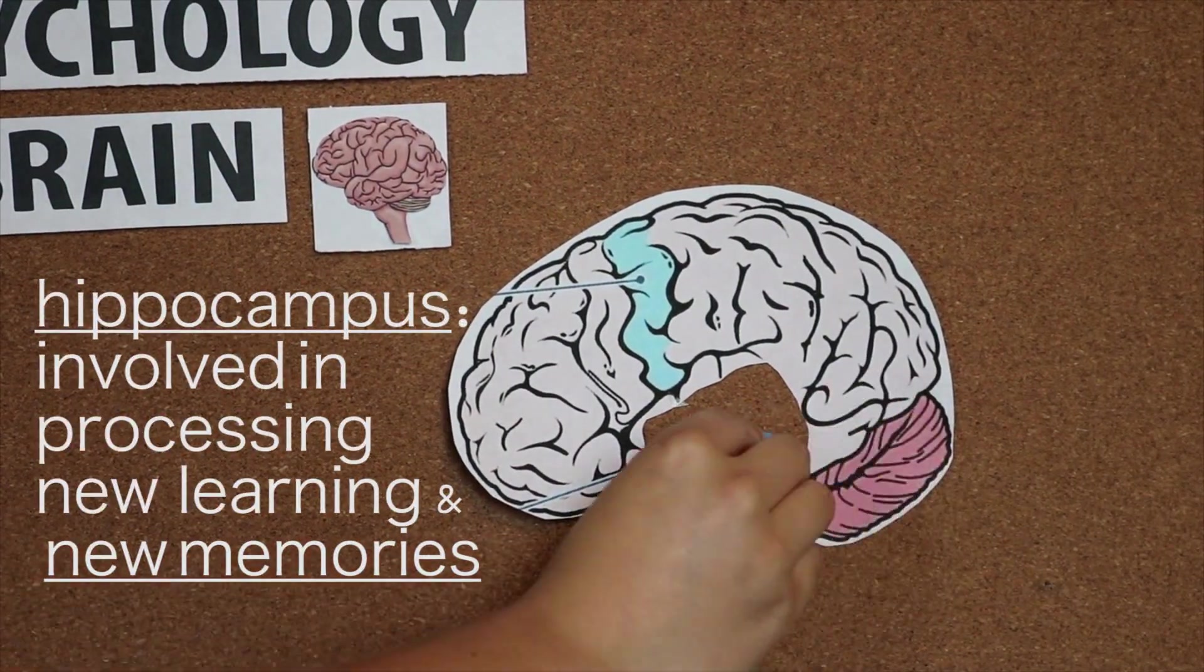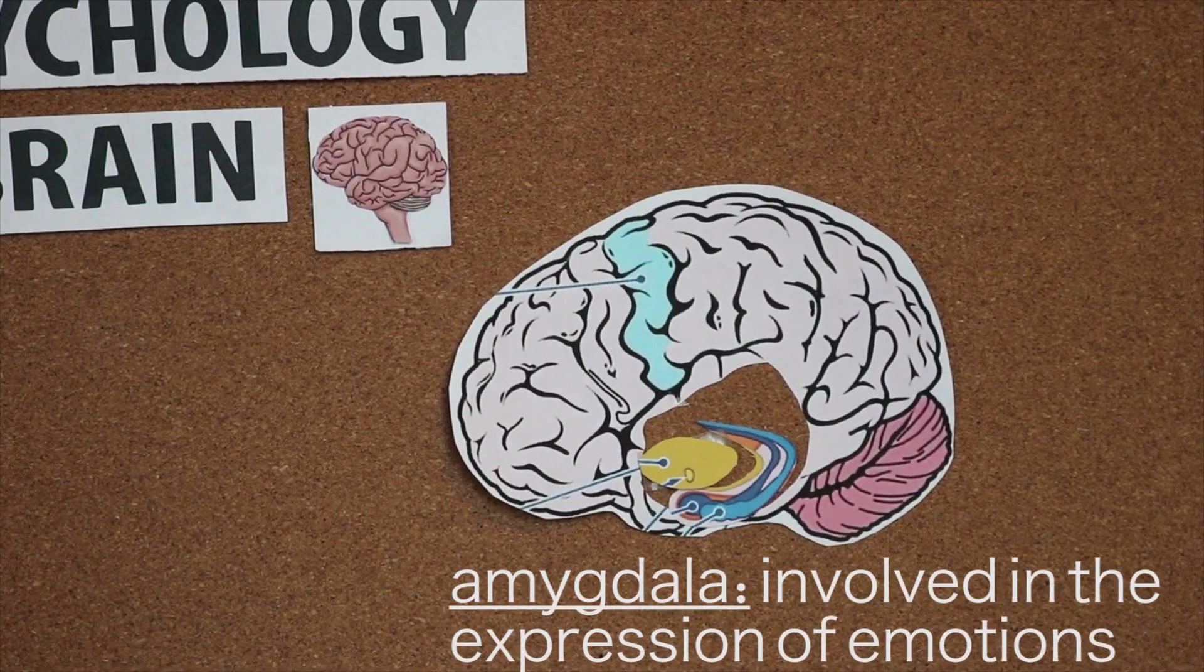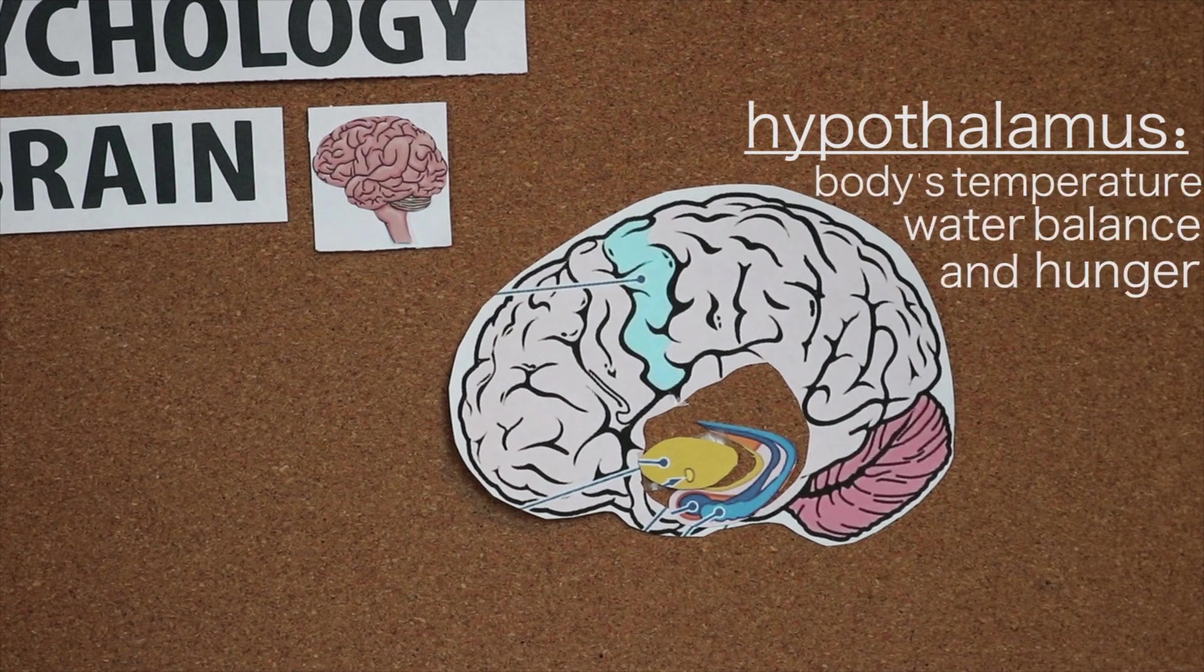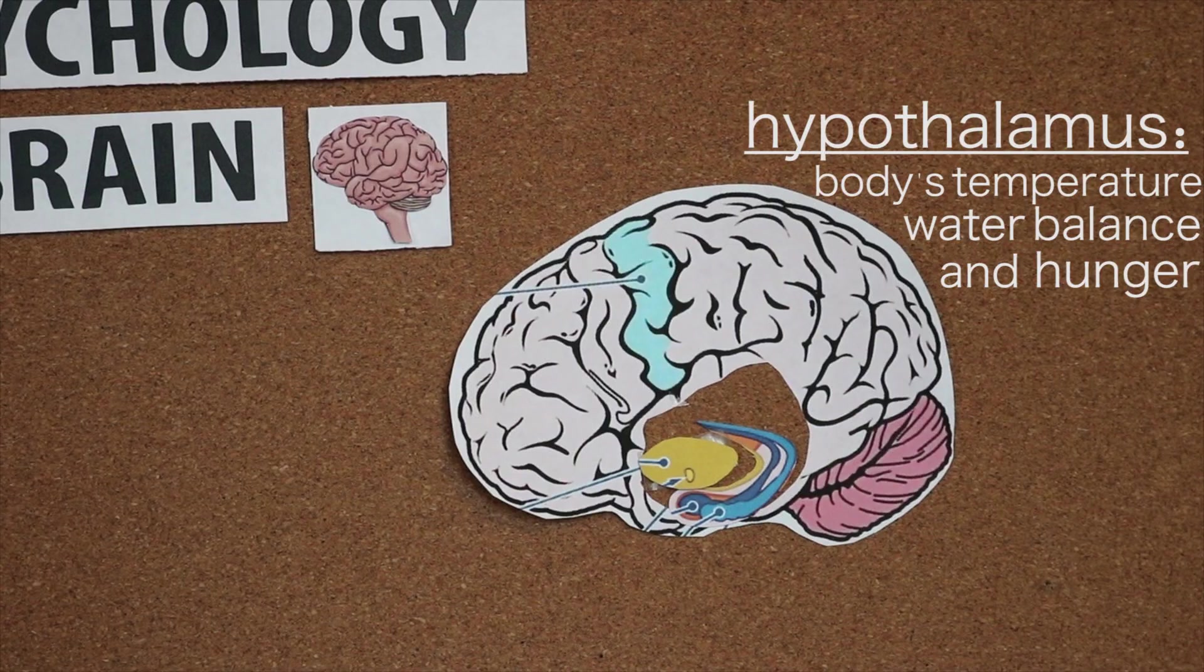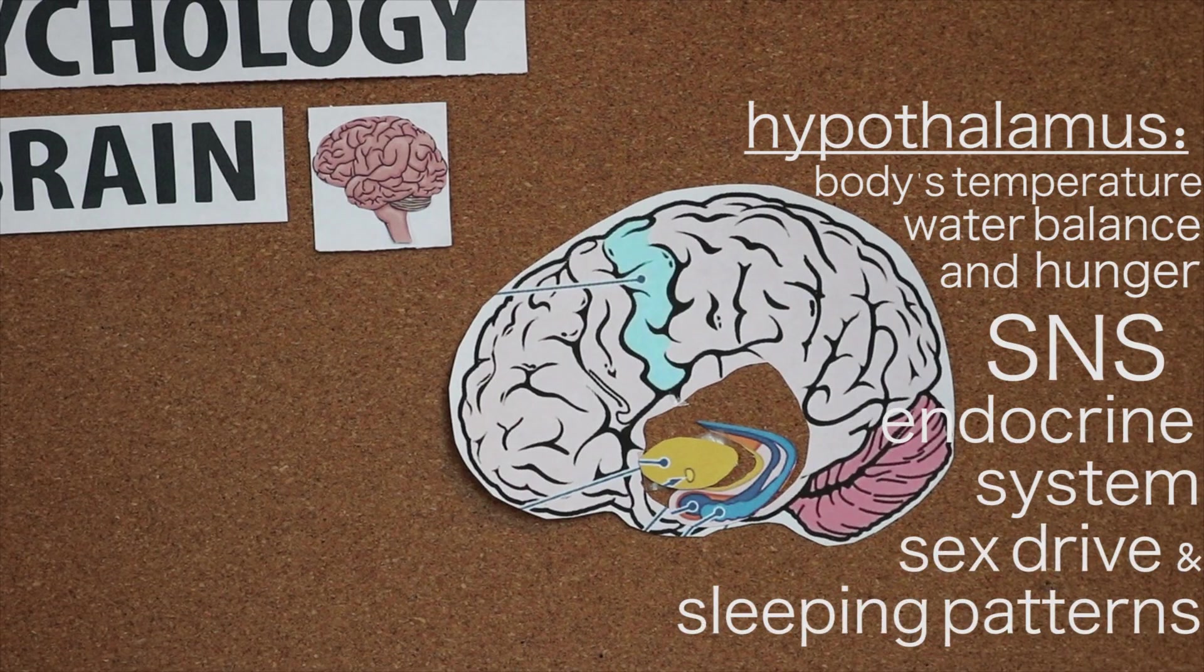The hippocampus is involved in processing new learning and new memories. The amygdala is more involved in the expression of emotions, such as anger and frustration. And the hypothalamus controls many things, such as our body's temperature, water balance and hunger, our sympathetic nervous system and endocrine system, and even our sex drive and sleeping patterns.